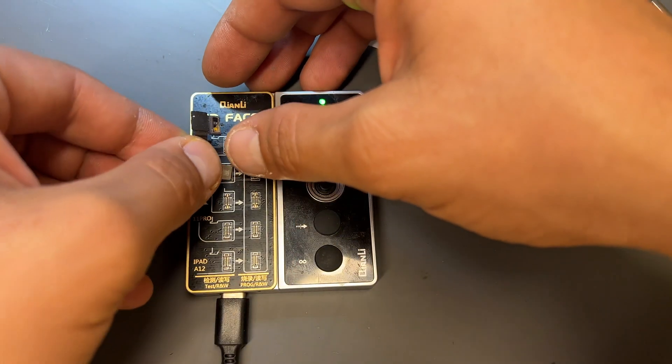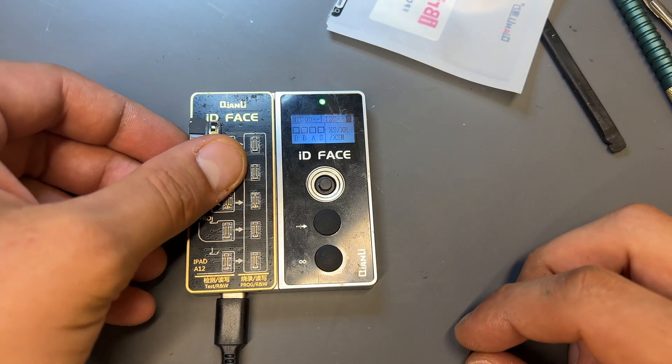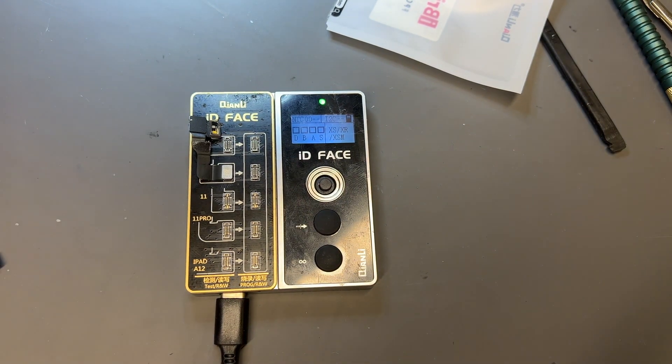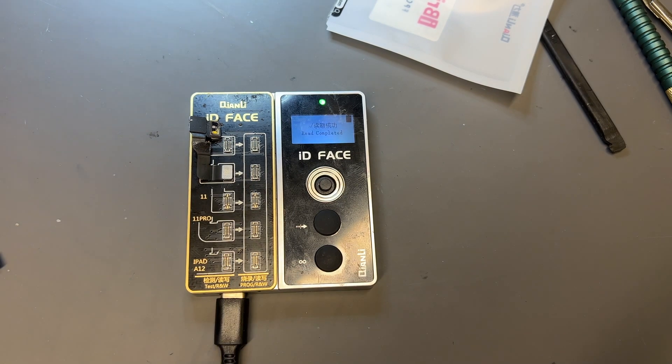With that released, I connect the original flex to the Face ID tool again. Then using the PC software, I choose detect chip then load chip. This then copies the lattice information into the PC ready to copy across to the new flex.